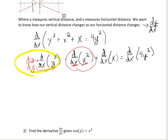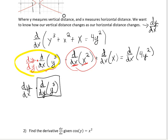Focusing on that first piece — d/dx of y³ — I multiply by dy/dy, which lets me rewrite it as dy/dx times d/dy of y³. Now I can take the derivative with respect to y. The derivative of y³ with respect to y is 3y², and I still have that dy/dx factor out front.